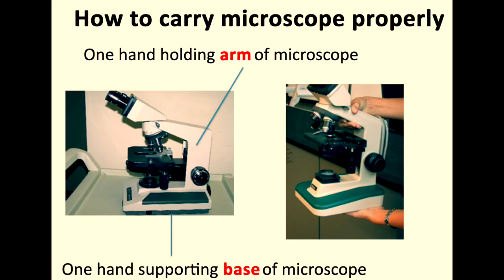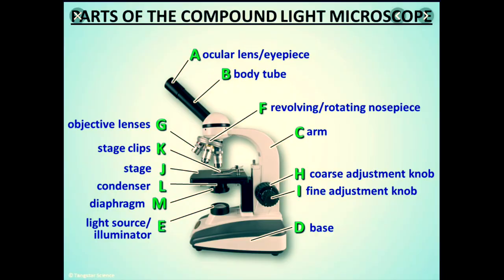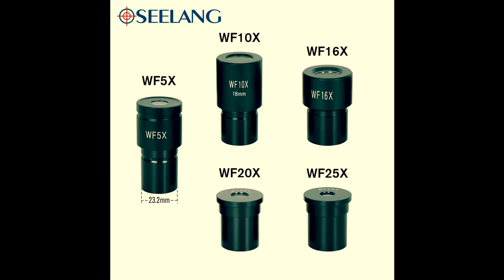This is a picture to now show you how to hold a microscope properly as has already been explained to you earlier. Let's start with the ocular lens or the eyepiece. This is how ocular lenses or eyepieces look like coming in various powers of 5, 10, 20, 16 and 25x.